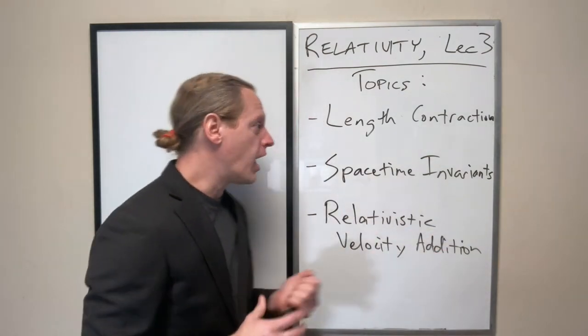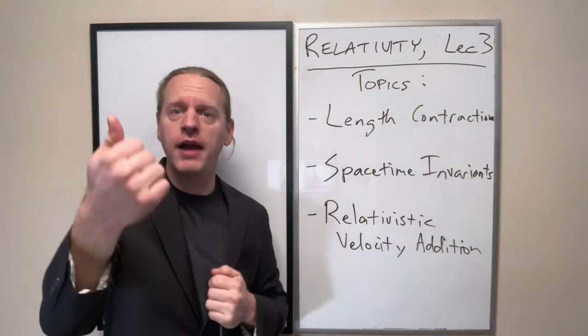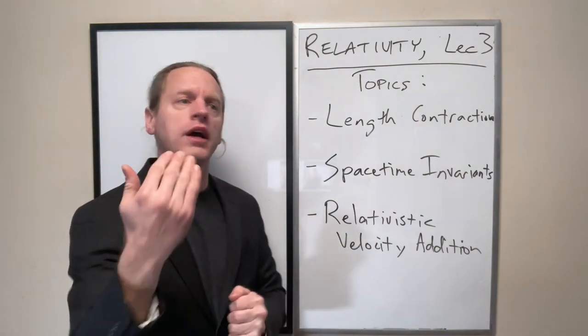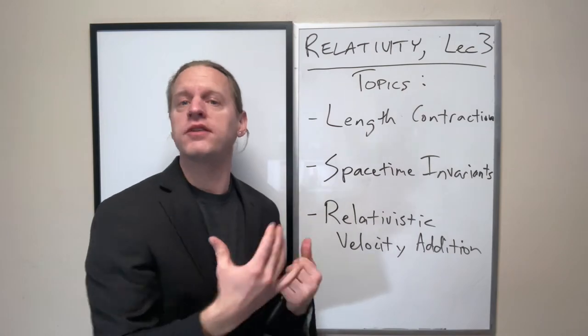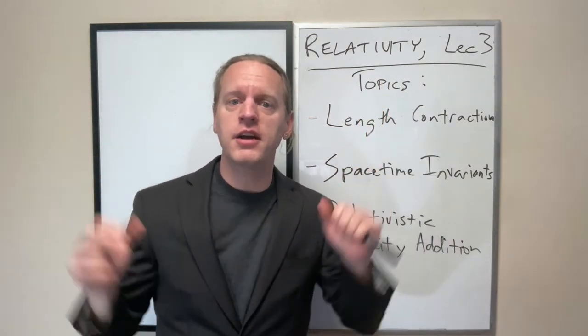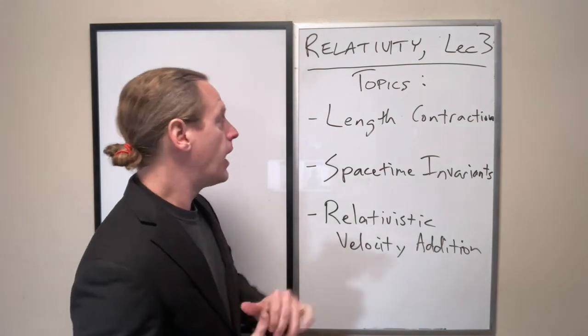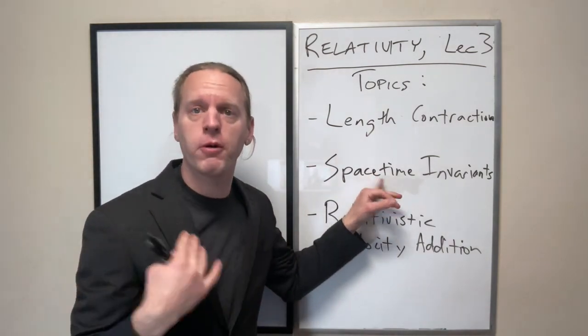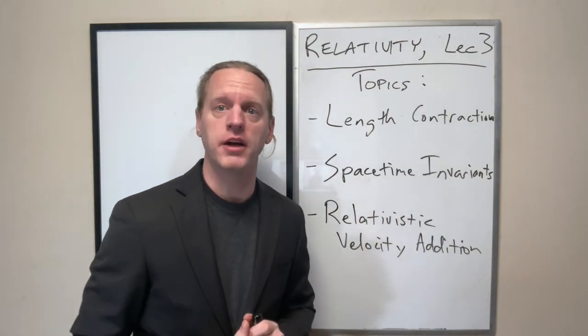And so what we're going to talk about after that, though, once we see that time and distances are stretched, we're going to consider what things don't change. What are the universal invariants or the relativistic invariant quantities? And this is going to be a really important focus for a lot of the rest of relativity here.